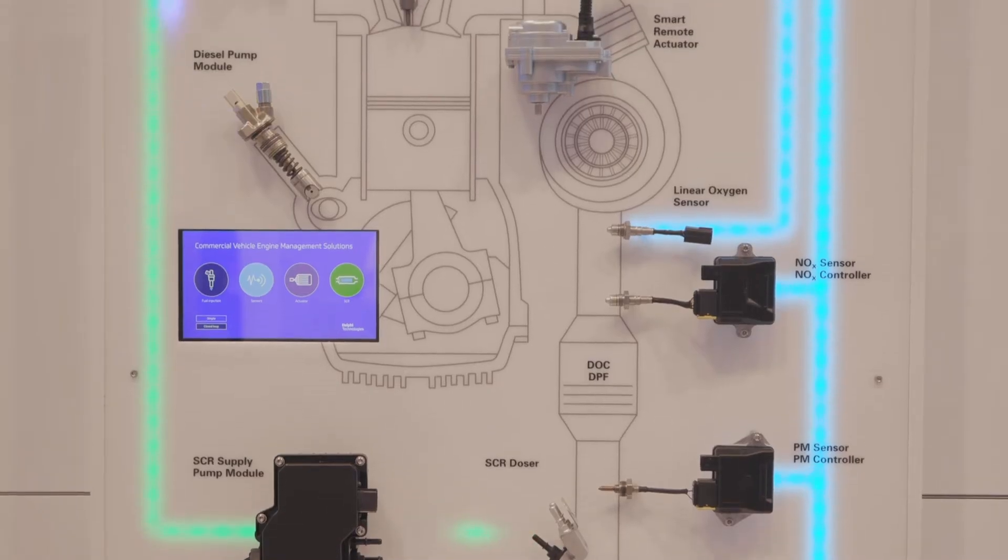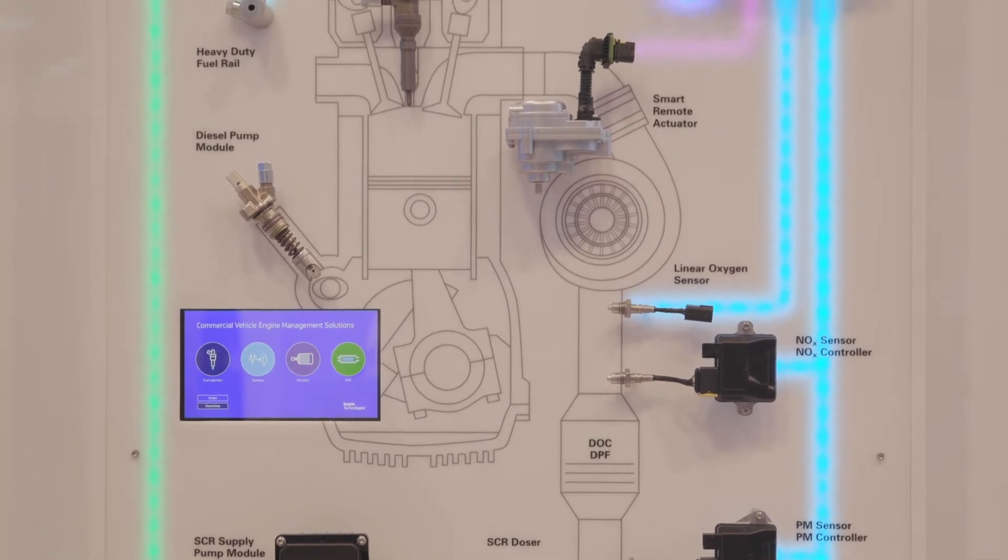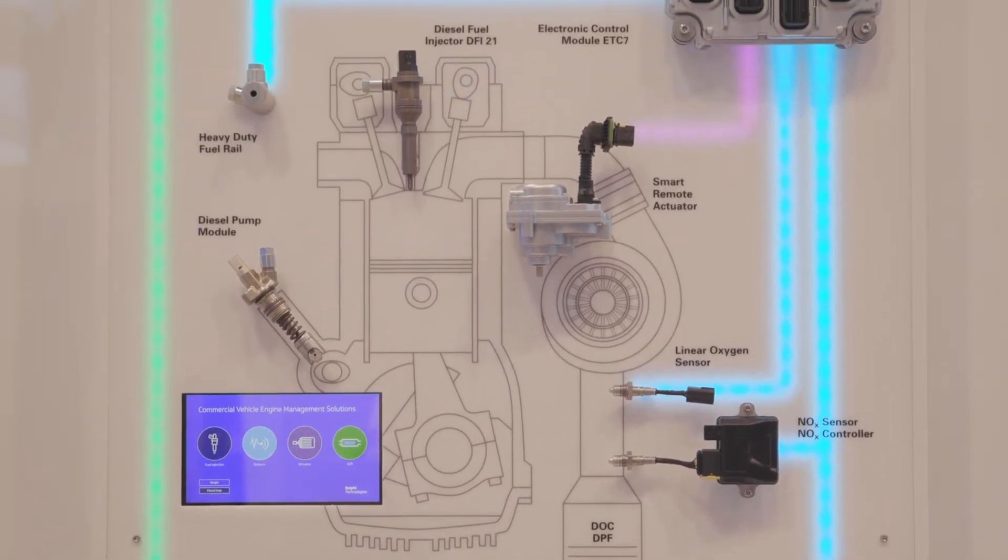Commercial vehicle represents around 25% of Delphi Technologies' revenues and is continuing to grow. What we're showcasing today is our next generation F3 common rail system for commercial vehicle.